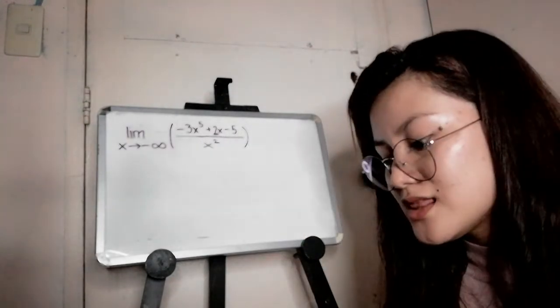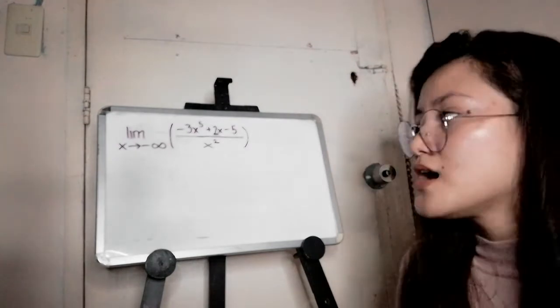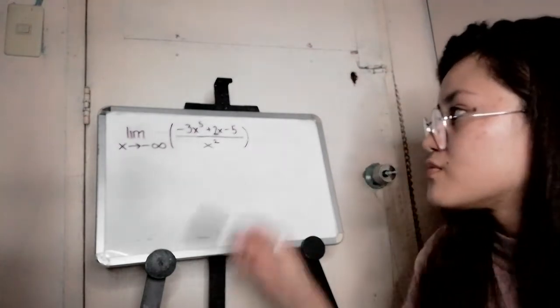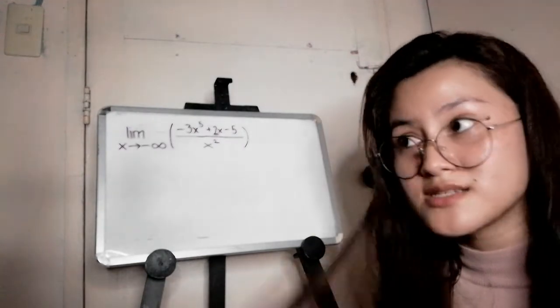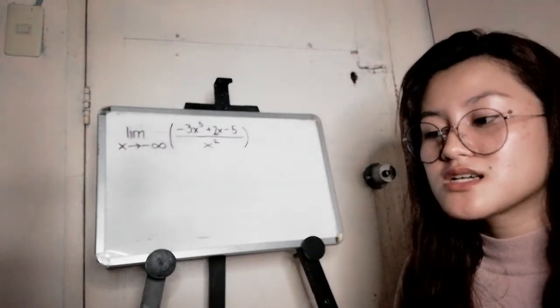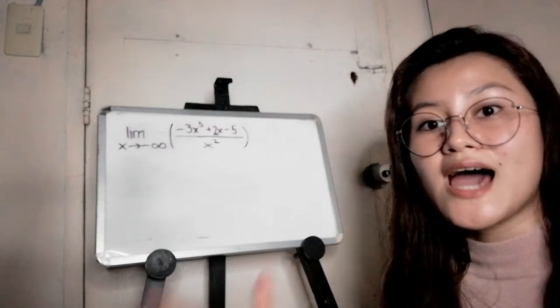So to get the limit, we only need the significant numbers of both the numerator and the denominator. So what do I mean by significant numbers? The significant numbers are the ones with the highest degree.